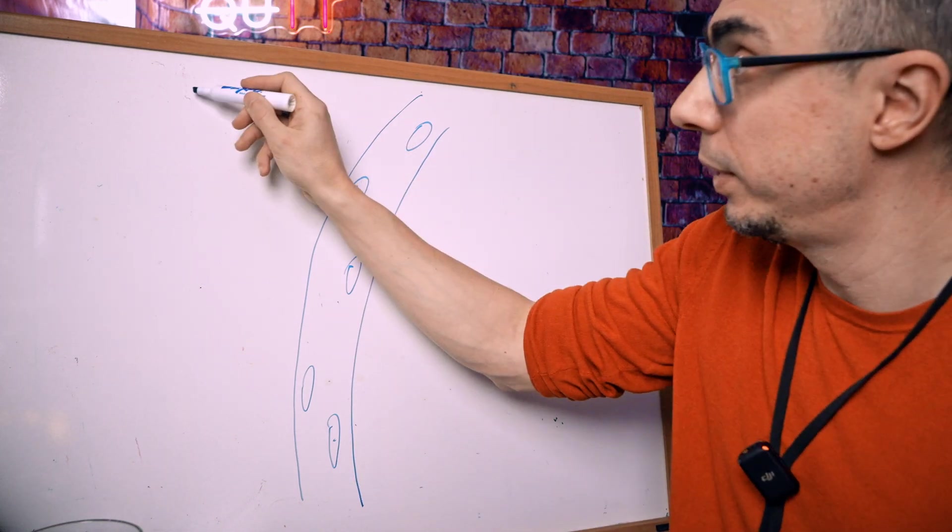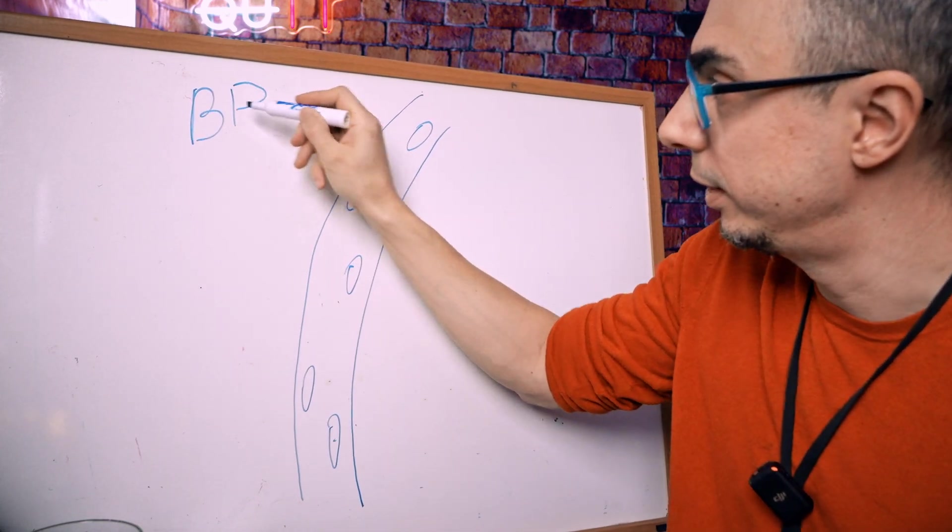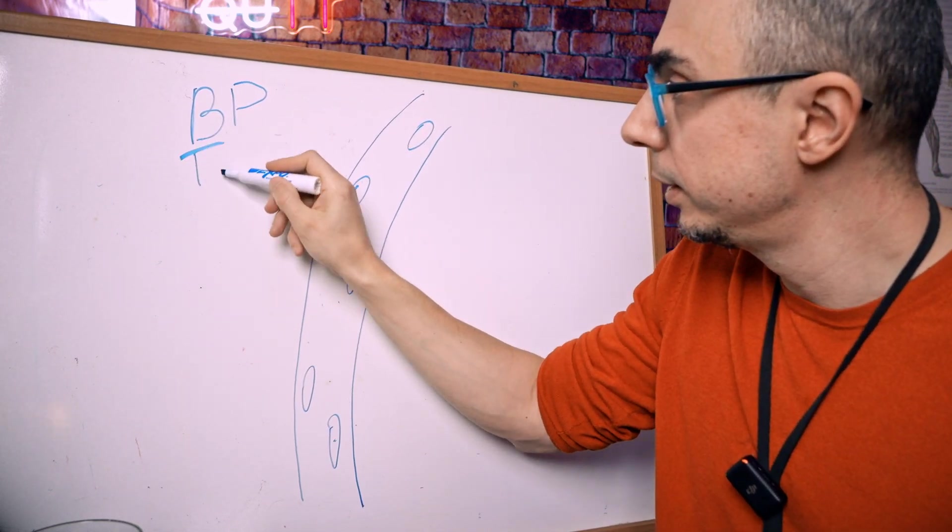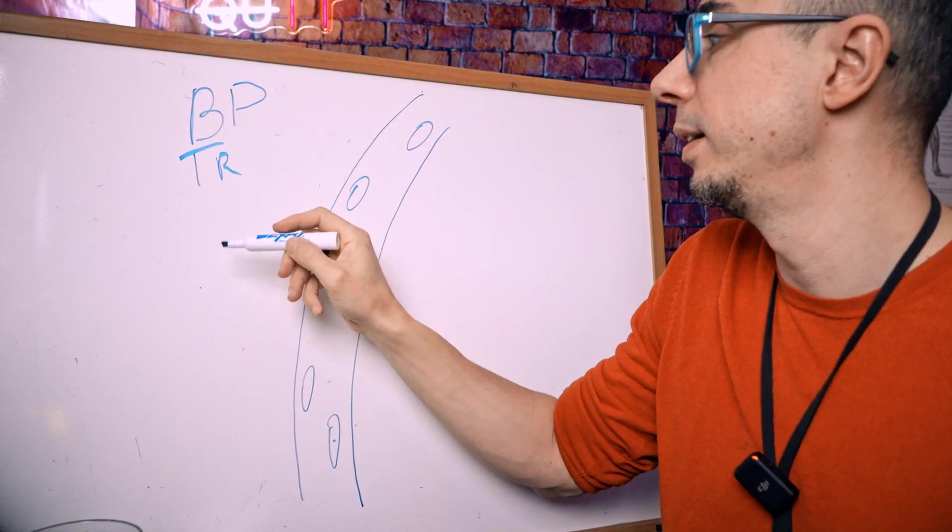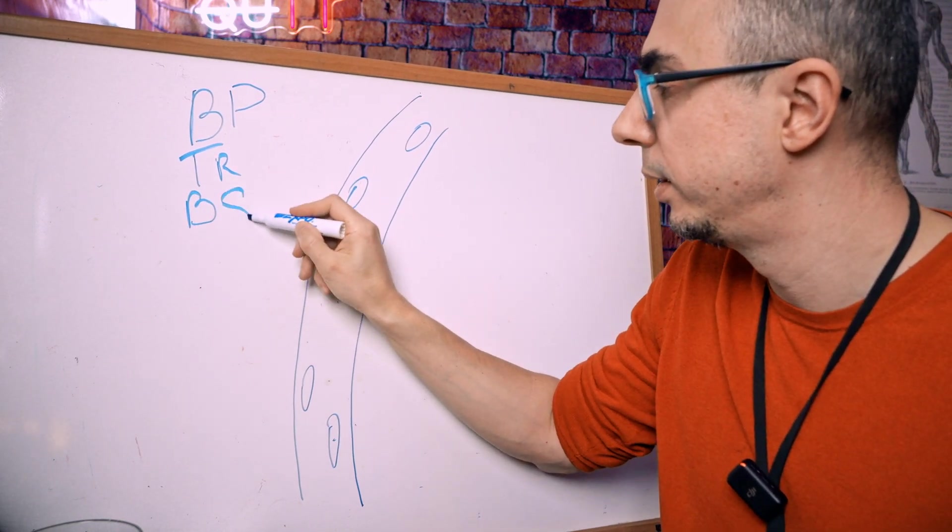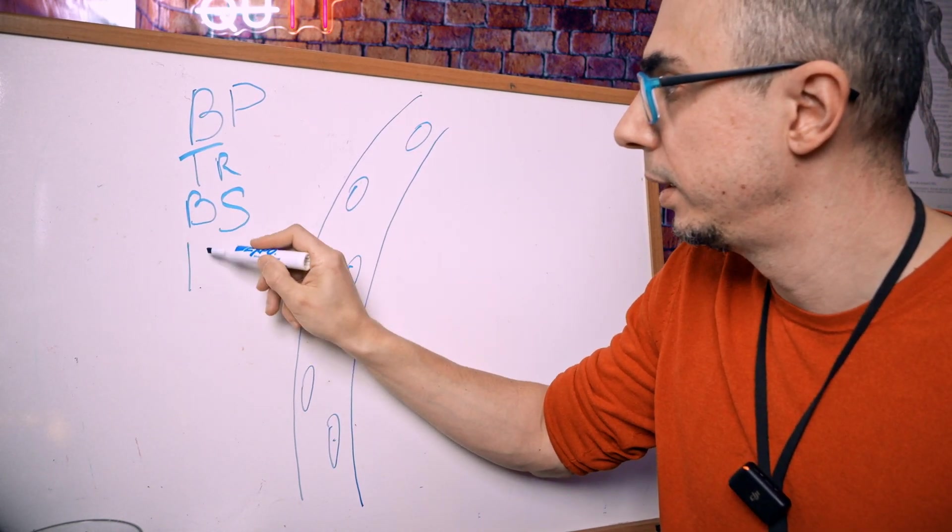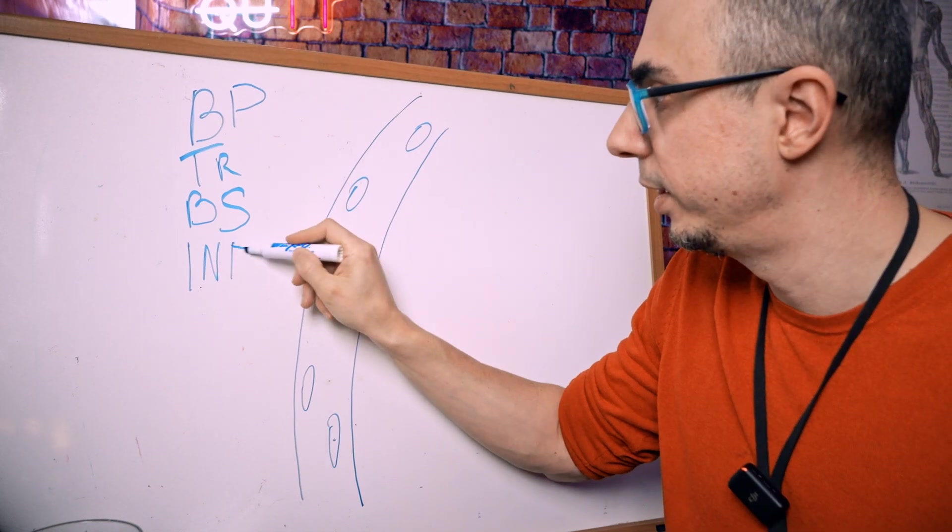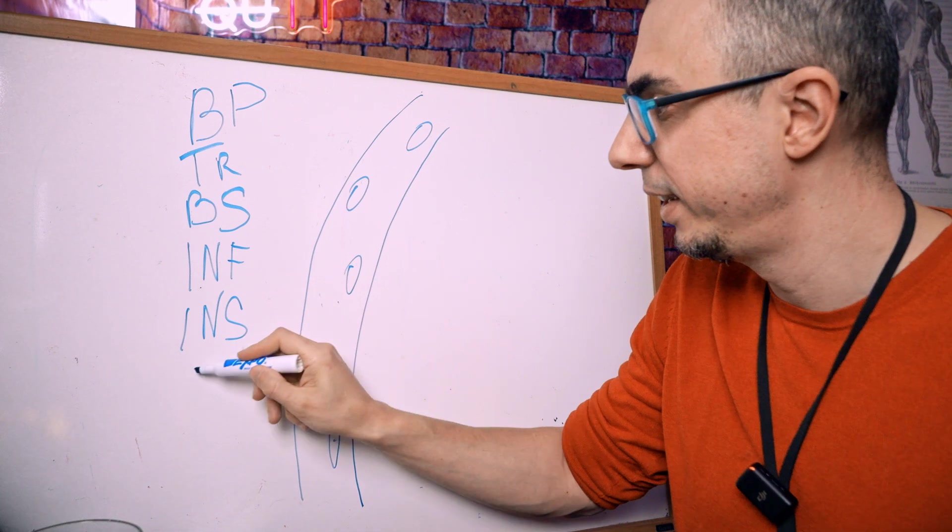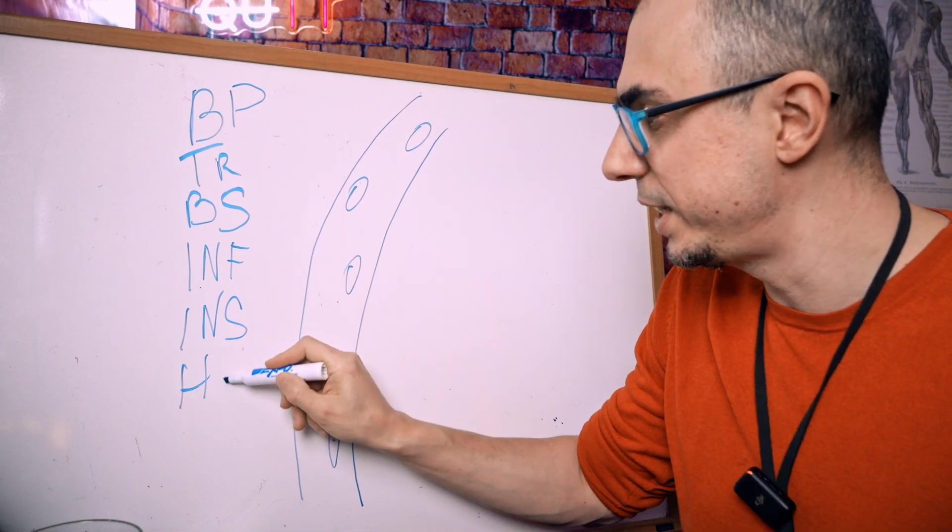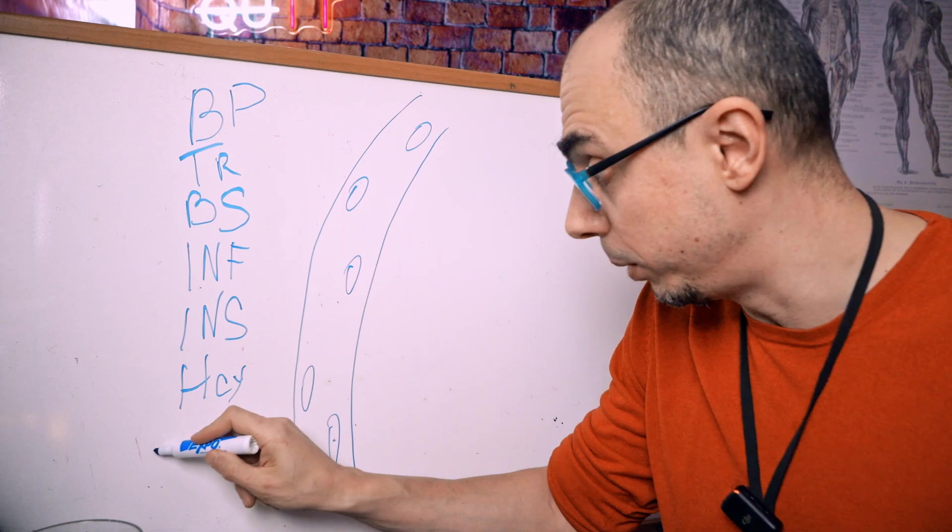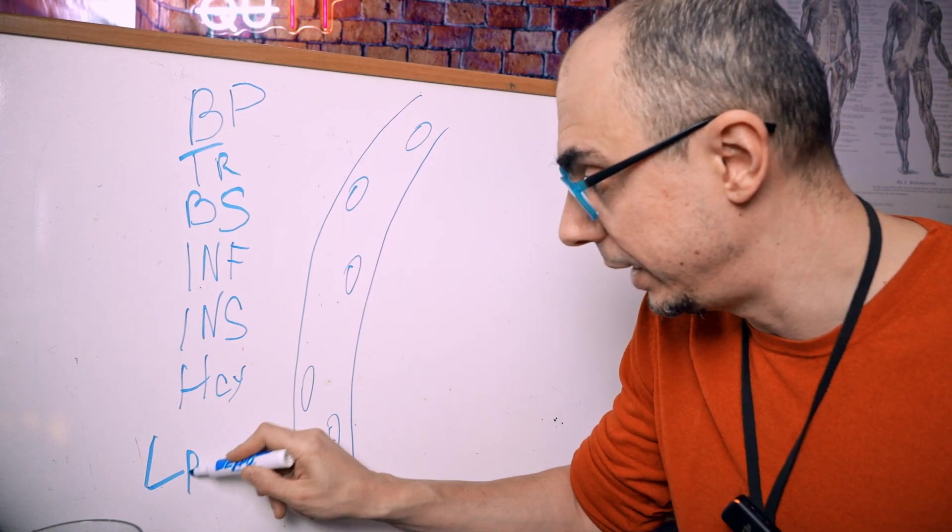We have blood pressure, which can go up. We have triglycerides, we have blood sugar, we have inflammation, we have insulin, we have homocysteine. And by the way, the deadliest of them all probably, we have LP little A.